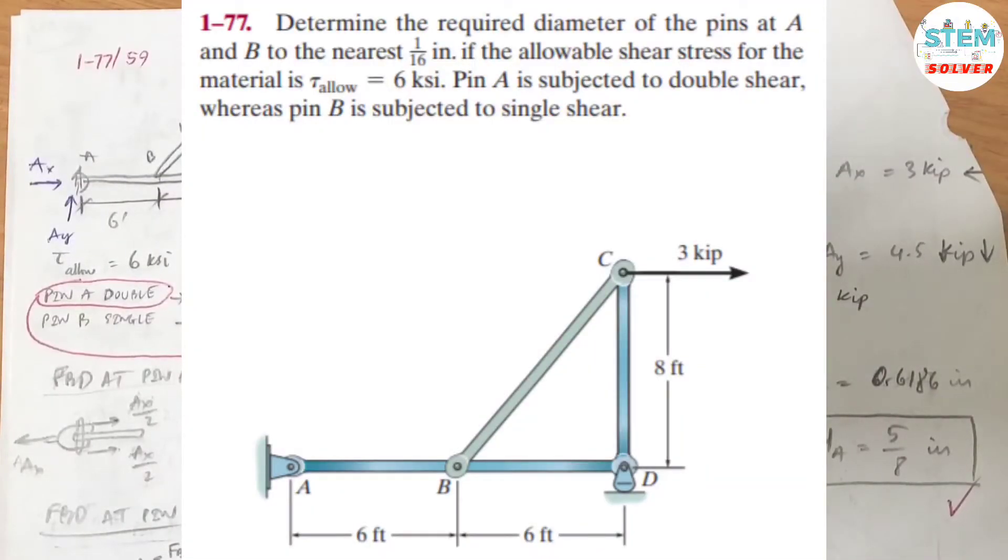Determine the required diameter of the pins at A and B to the nearest 1/16th inch if the allowable shear stress for the material is 6 KSI. Pin A is subjected to double shear whereas pin B is subjected to single shear.